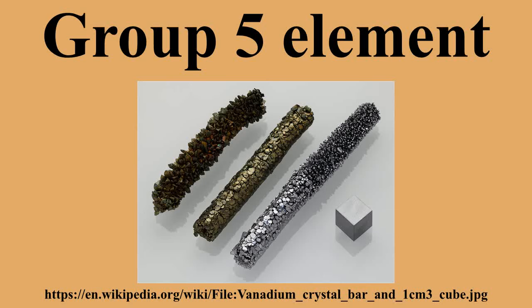Group 5 is a group of elements in the periodic table, containing vanadium, niobium, tantalum, and dubnium. This group lies in the D block of the periodic table. The group itself has not acquired a trivial name. It belongs to the broader grouping of the transition metals. The lighter three Group 5 elements occur naturally and share similar properties — all three are hard refractory metals under standard conditions.